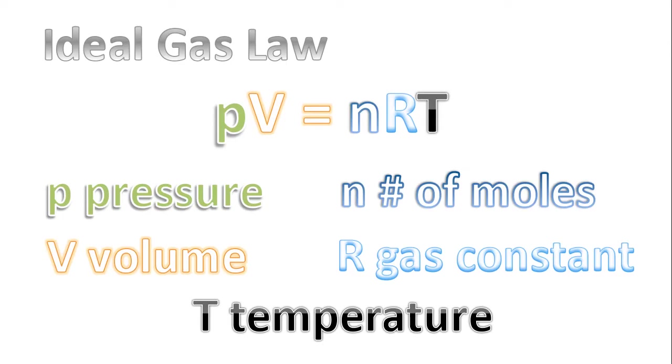Here's the ideal gas law: PV equals nRT. P stands for pressure. V is the volume. R is called the gas constant. T is the temperature. And finally, n represents the number of moles of the ideal gas.